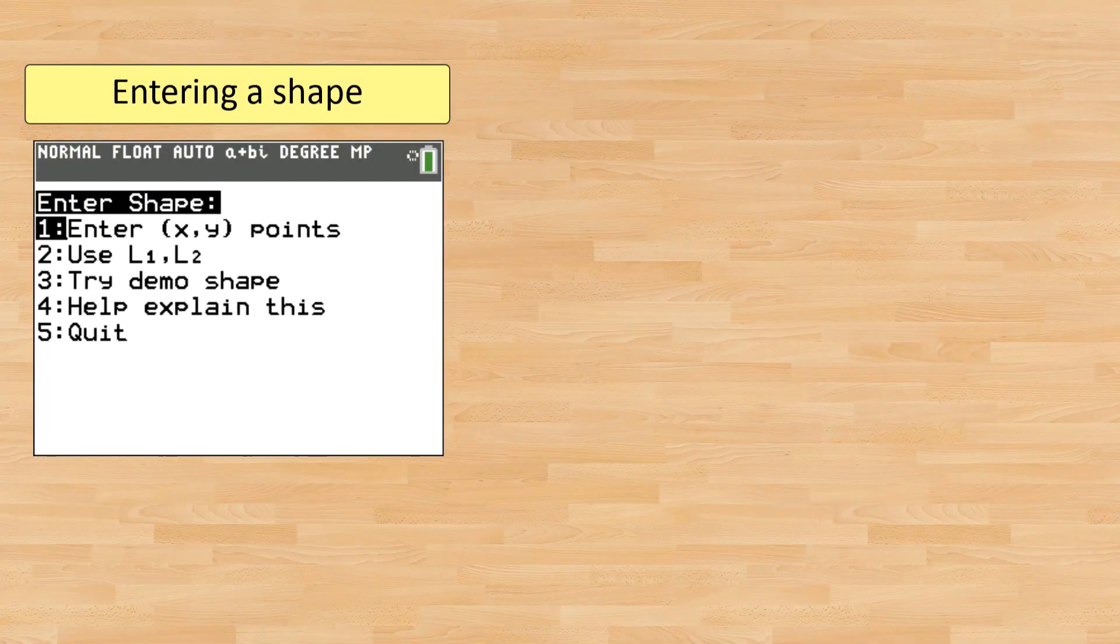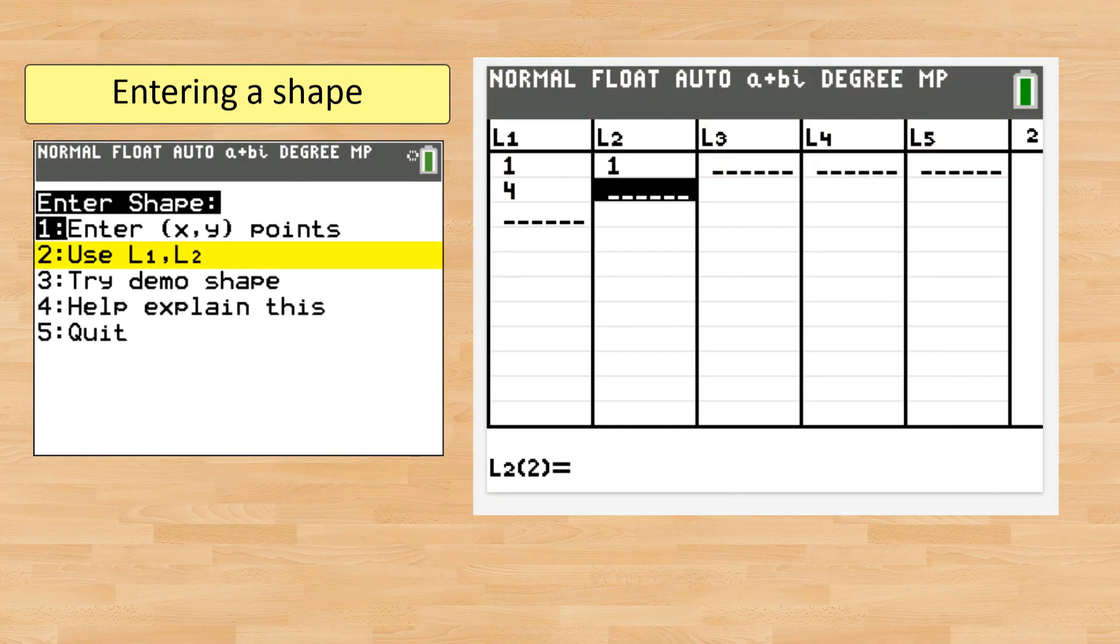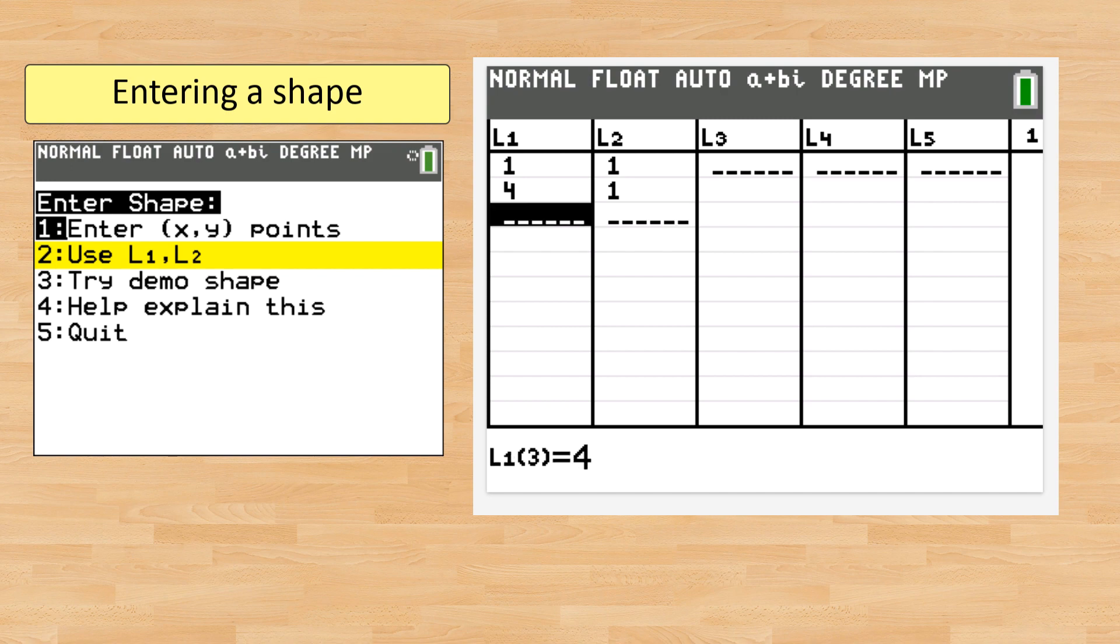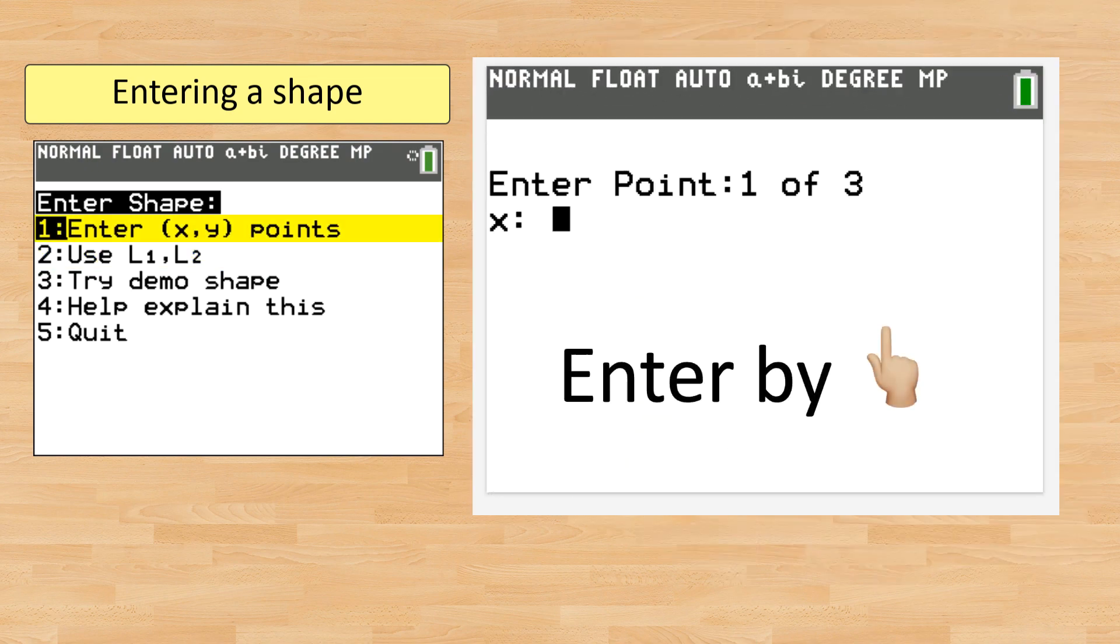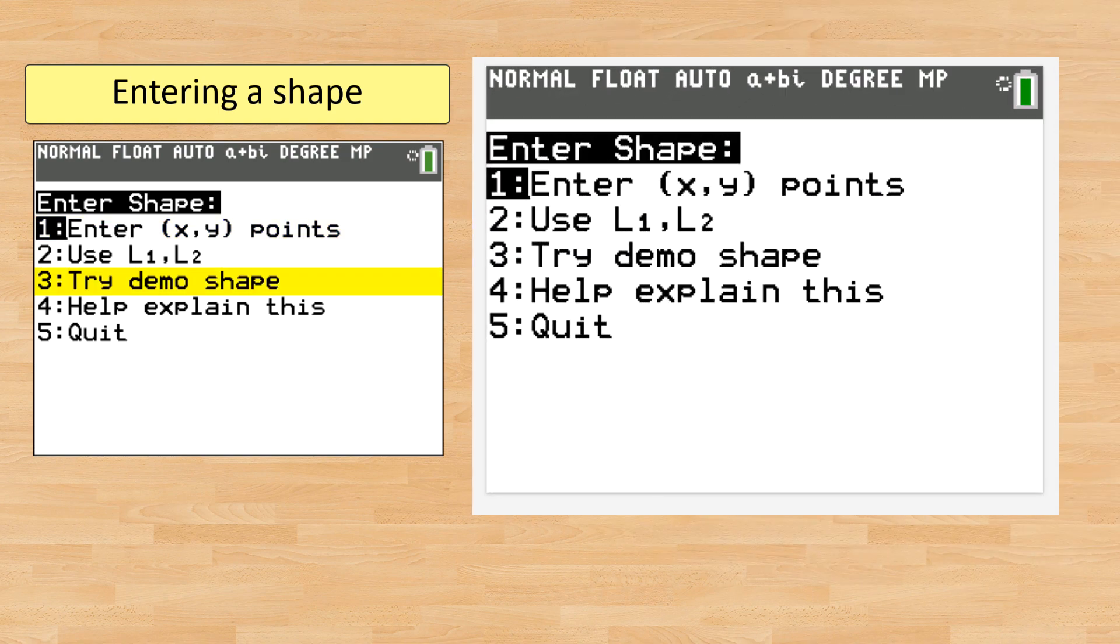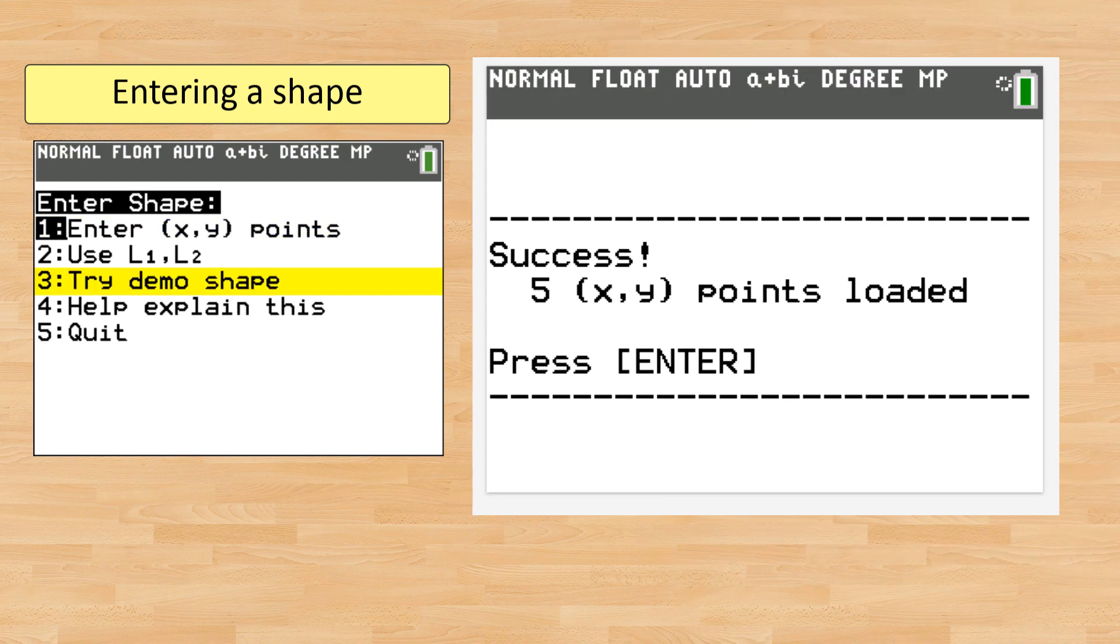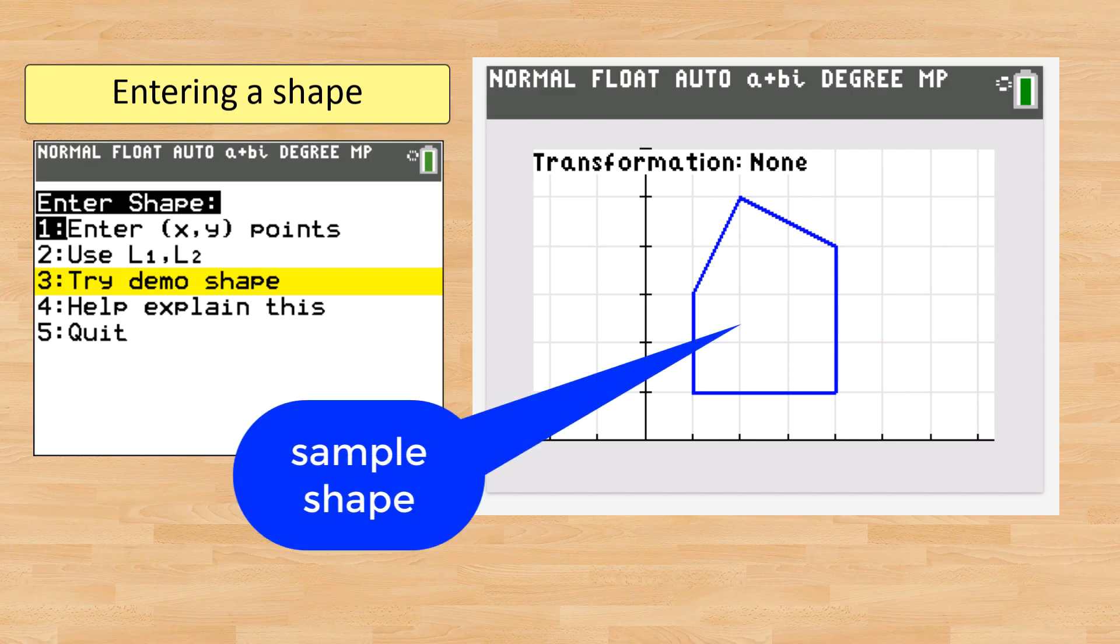Let's see how rotations work. First you need to enter a shape. This is done by entering in the vertices of a polygon. You can enter them as XY coordinates using the built-in lists or you can enter them by hand, or you can try things out with a pre-loaded shape which is an irregular pentagon.